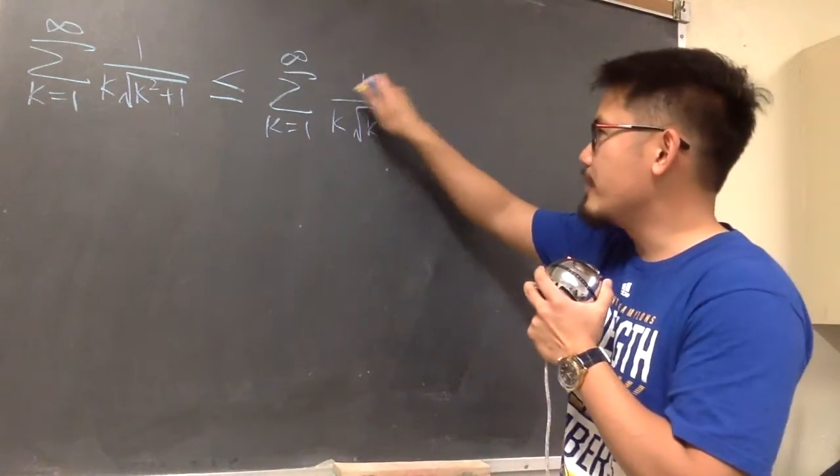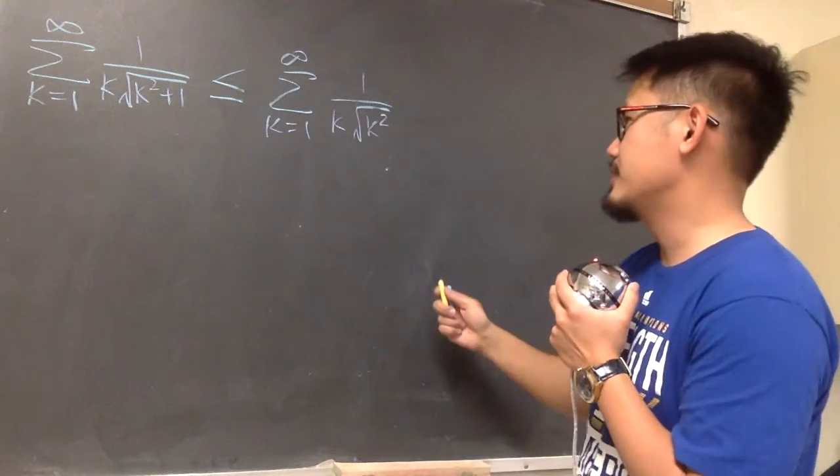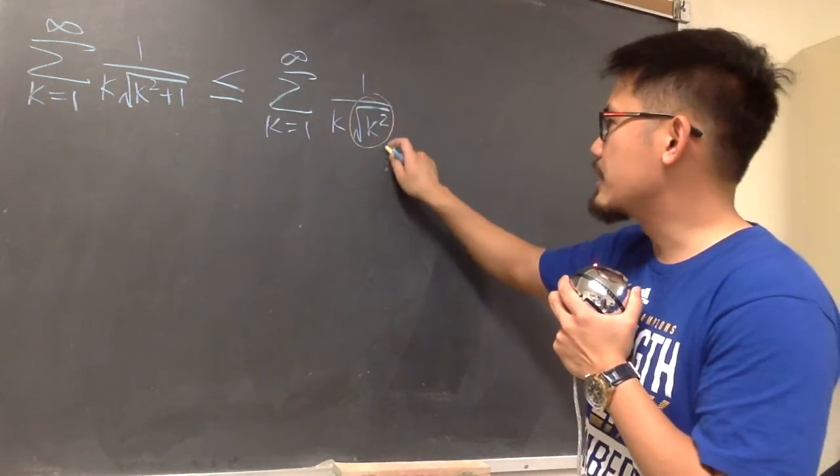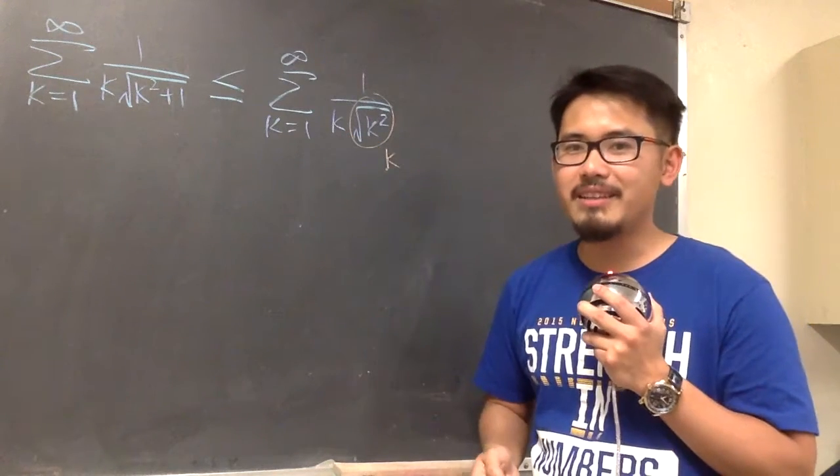And let's take a look. 1 over k times the square root of k squared. What is this? Well, this right here is just k, and then we have another k, right? k times k in the denominator, we have 1 over k squared.